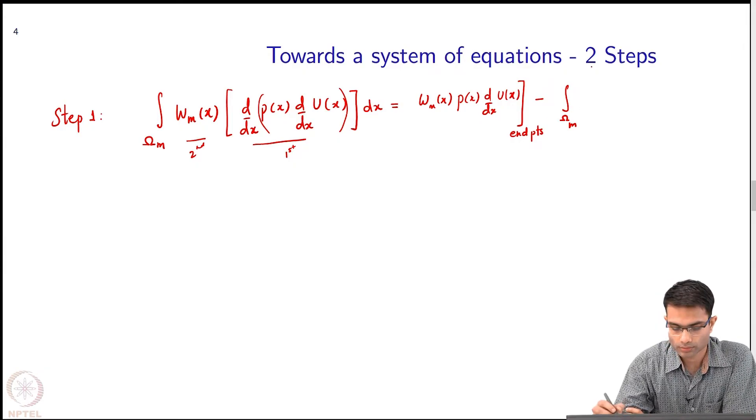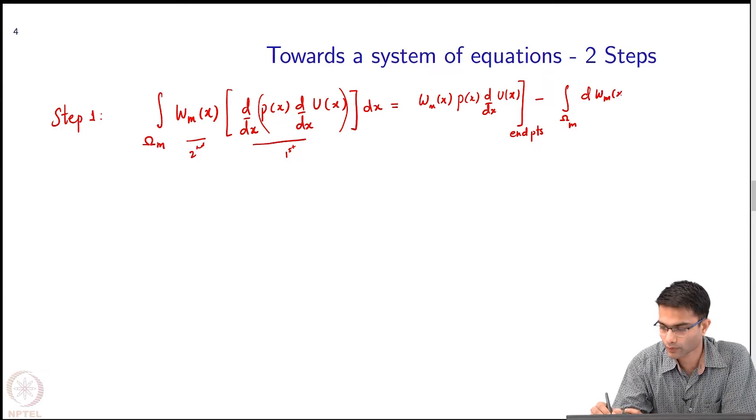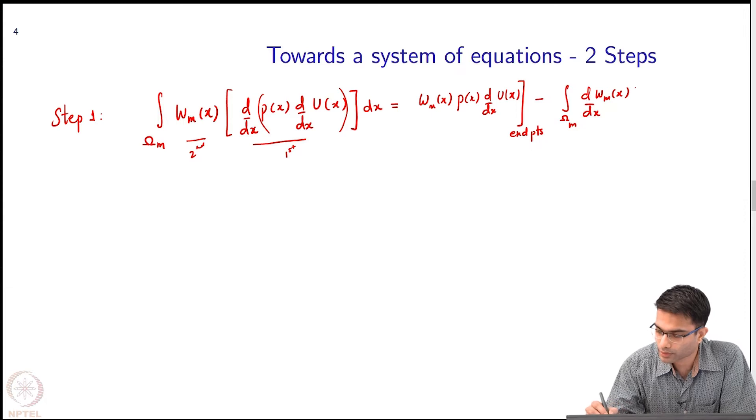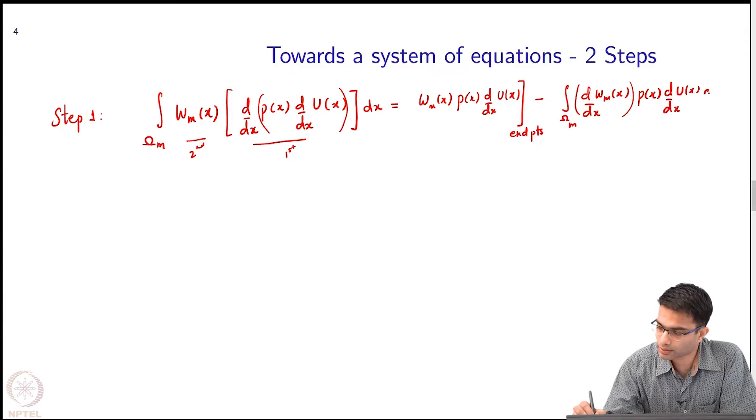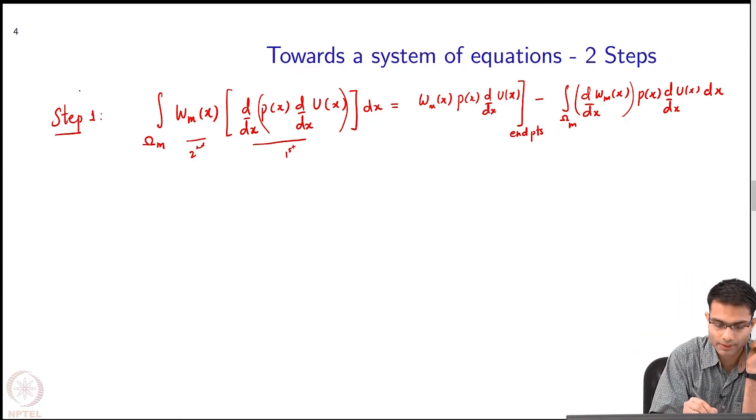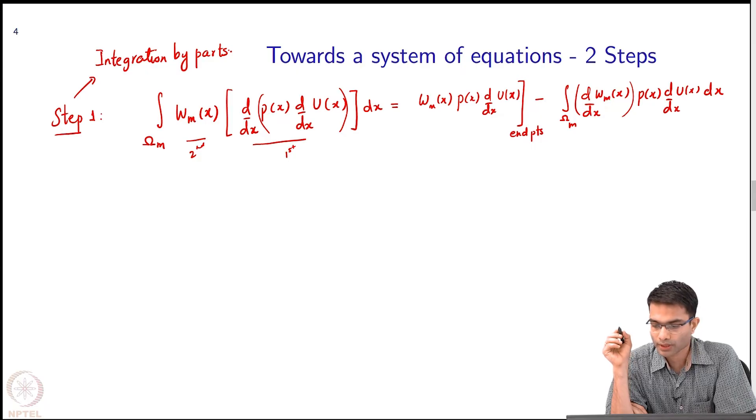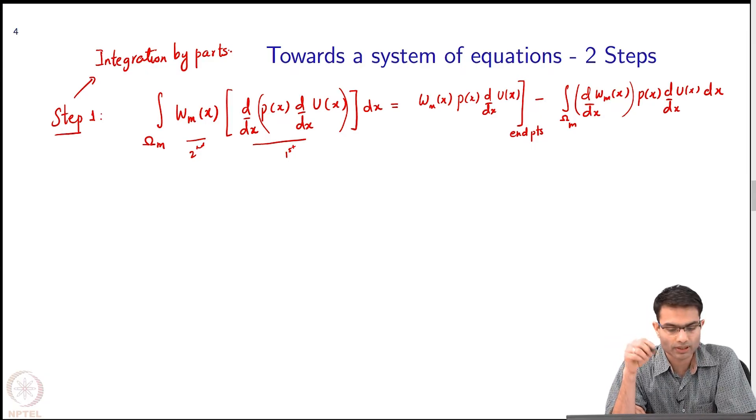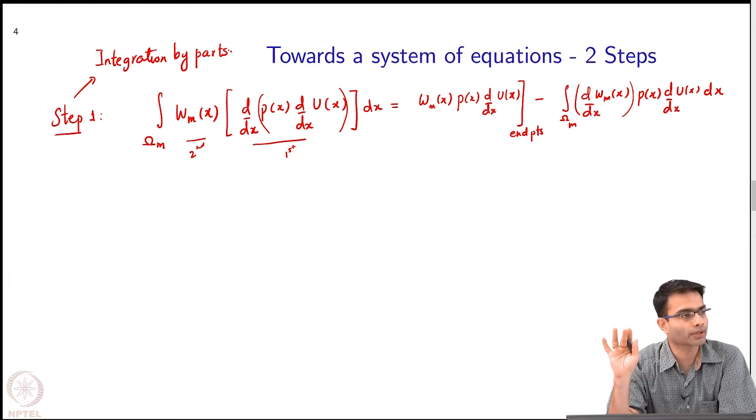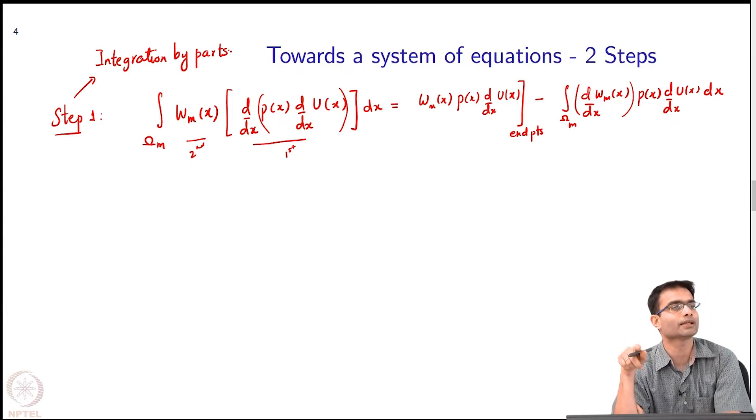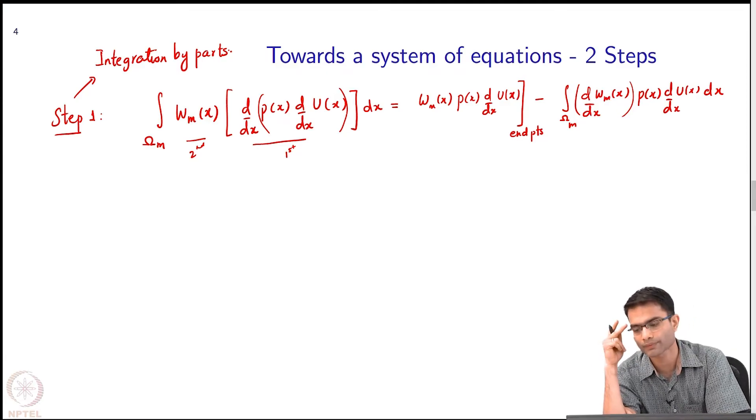And then what happens to the other term? Minus I have a derivative of the second function multiplied by - let us write it here, this is one term - and then I have p(x) into derivative of u(x) by dx. Step one was basically integration by parts. Integration by parts is what has given us this simplification. Now this looks very simple to do in 1D, it is actually very simple to do in higher dimensions also, except that instead of d/dx you will have a del operator, that is the only difference, and we will look at that in 2D when we come to 2D.